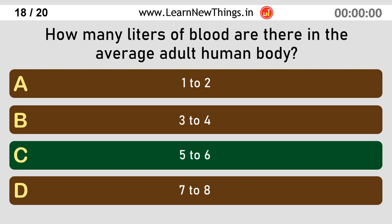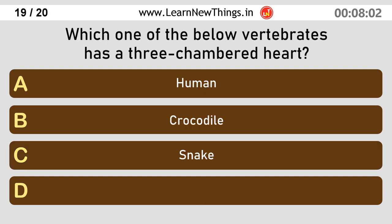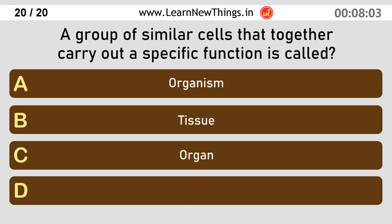How many liters of blood are there in the average adult human body? 5 to 6. Which one of the below vertebrates has a three-chambered heart? Snake. A group of similar cells that together carry out a specific function is called tissue.